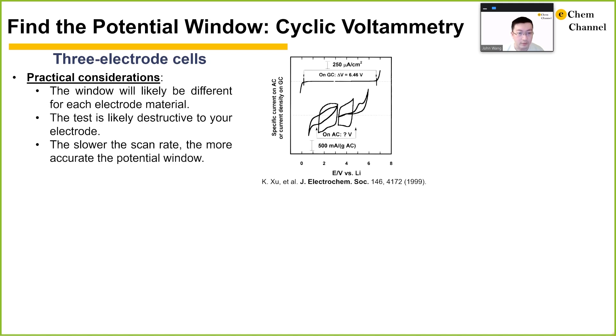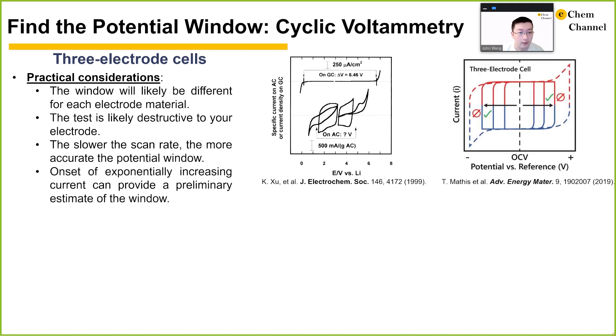Third, in an actual experiment, the measured potential window will be affected by the kinetic limitations on top of the thermodynamic limitations. The window will always be smaller when you use a slower scan rate of cyclic voltammetry. For more accurate window determination, you will want to use a slow rate in the context of your experiments.